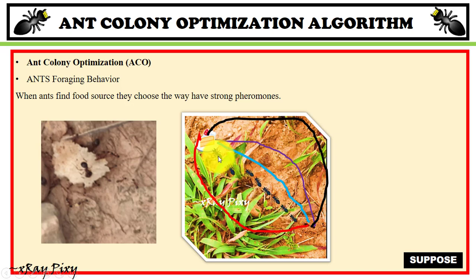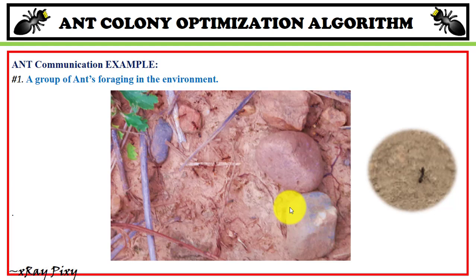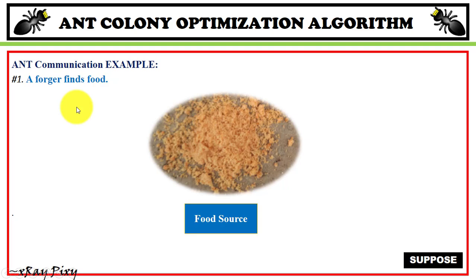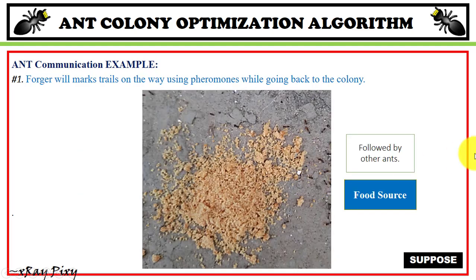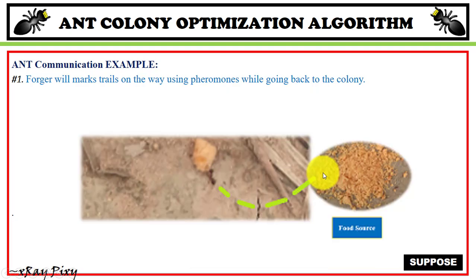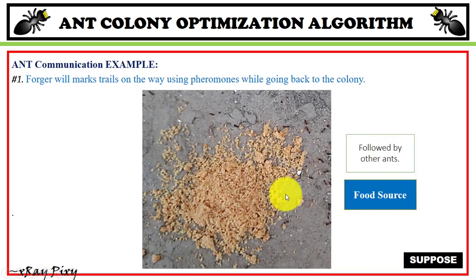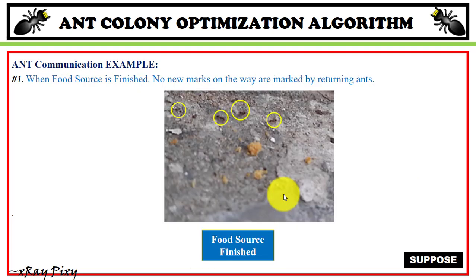A group of ants forages in the environment for food sources, searching randomly. When a forager finds food, it marks the trail on the way back to the colony using pheromone. Other ants can see the pheromone marks on the ground and follow them. More ants gather around the food source. When the food source is finished, no new marks are made by returning ants.